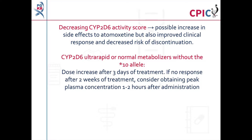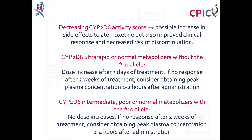If a patient is a CYP2D6 ultra-rapid metaboliser or a normal metaboliser who does not carry the star-10 allele, they should be given a dose increase after three days of treatment. If they do not respond to atomoxetine therapy after two weeks of treatment, assessing the peak plasma concentration one to two hours after administration should be considered. A dose increase is not required for CYP2D6 intermediate metabolisers, poor metabolisers, or normal metabolisers who carry the star-10 allele. If these patients do not respond after two weeks of treatment, assessing the peak plasma concentration two to four hours after administration should be considered.